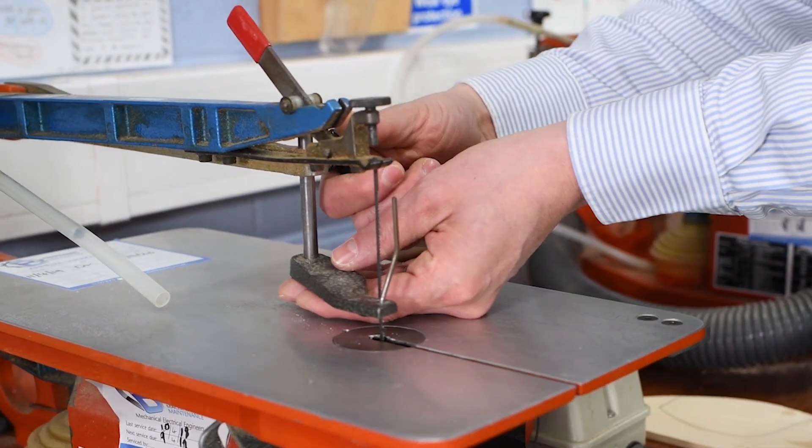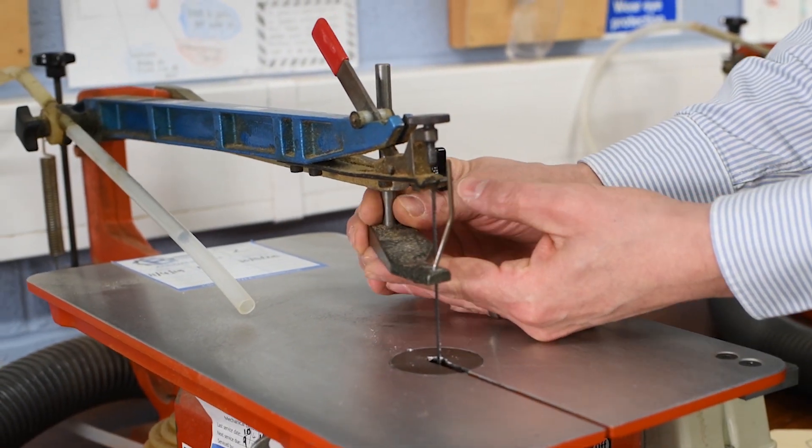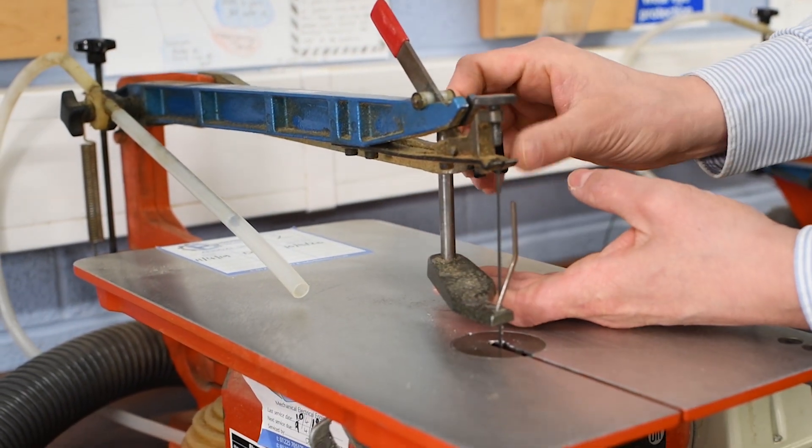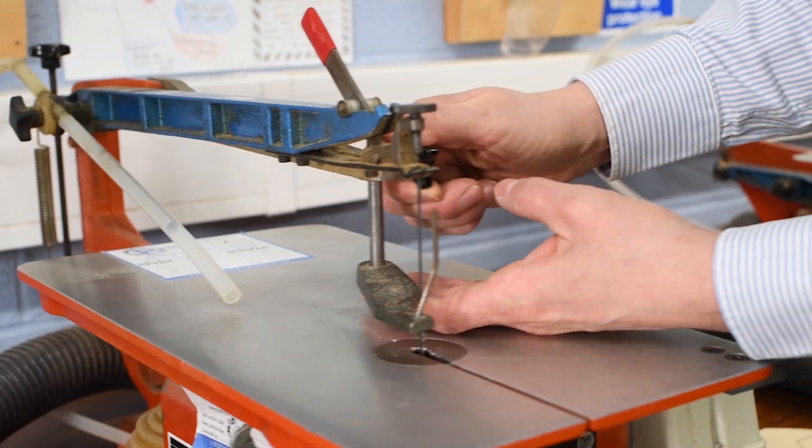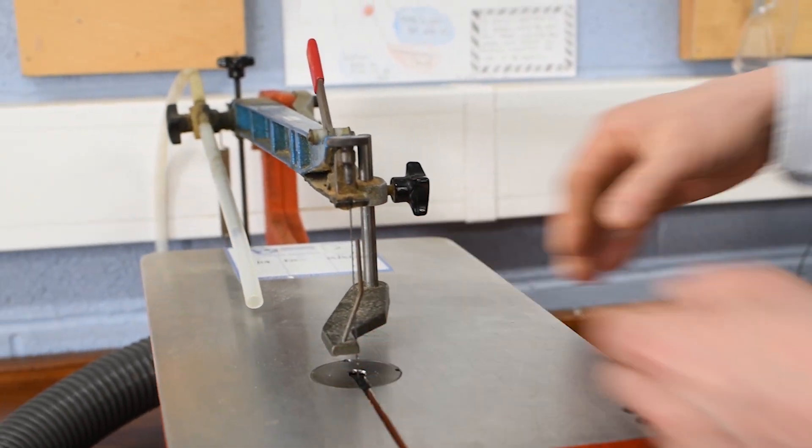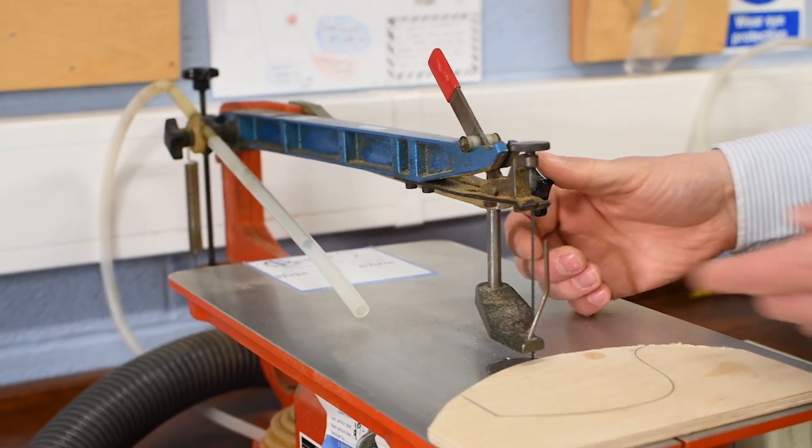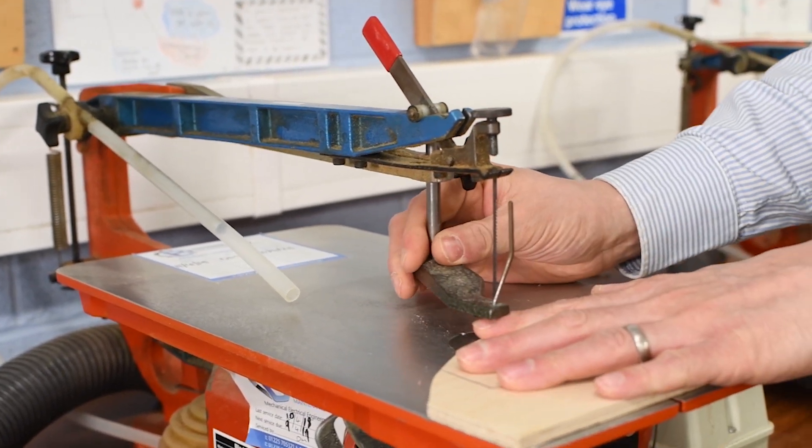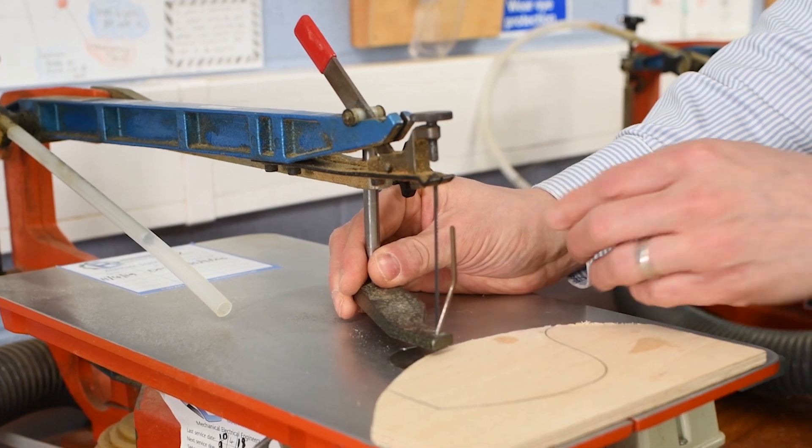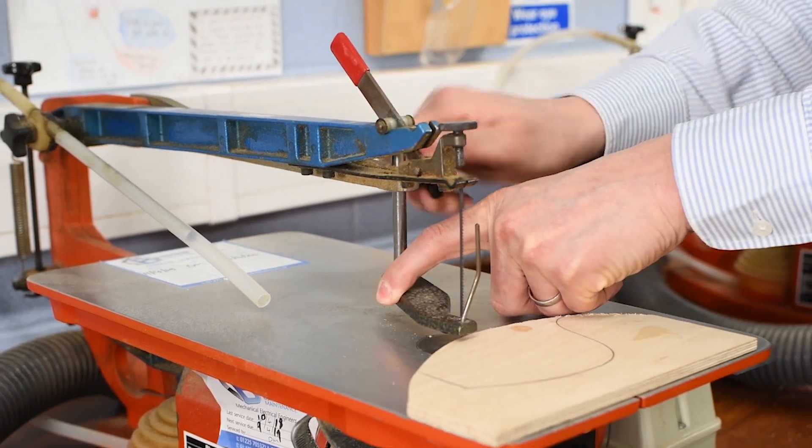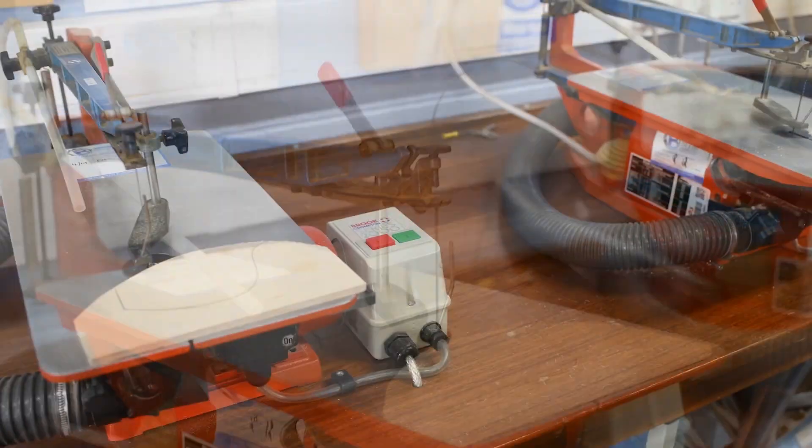Also, this guard can be placed up and down depending on the thickness of the material. There's a little nut here to secure it in place and it needs to be high enough for your piece of material to sit underneath, but not high enough for your finger to be trapped underneath. So it needs to be raised just two or three millimeters above the material and then secure it.